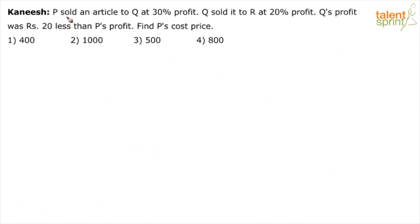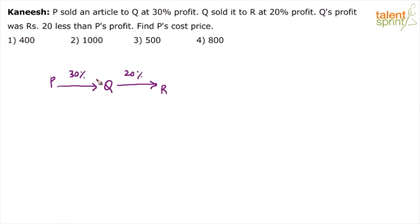P sold an article to Q at 30% profit. Then Q sold it to R at a profit of 20%. Q's profit was 20 rupees less than the profit of P. Based on this data, we are supposed to find the cost price of P.